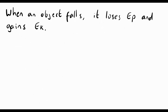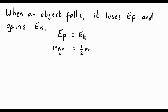When an object falls, it loses gravitational potential energy but gains kinetic energy. Remember, energy is not created or destroyed — it's constantly being transferred. So the potential energy it had at the top before it was dropped becomes the kinetic energy as it moves down. We can write that the gravitational potential energy at the top must equal the kinetic energy at the bottom: MGH equals a half MV squared. We've got M on both sides of the equation, so we can cancel it out to simplify.